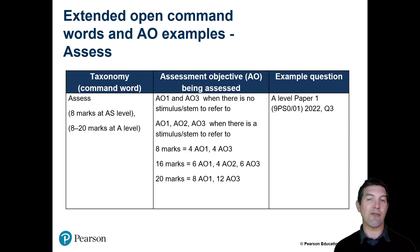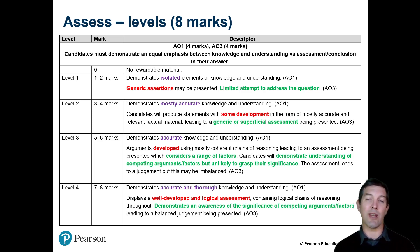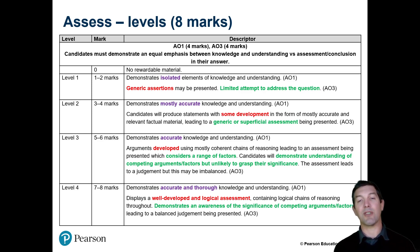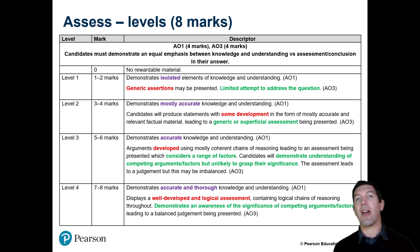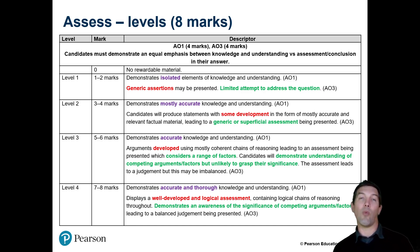Assess is used for a slightly different range of questions, but again it's always AO1 and AO3, with AO2 also possible if there's a context — four marks available for that. The level-based mark scheme looks very similar. Comparing it with the previous one, we're now looking for competing arguments instead of strengths and limitations, and a balanced judgment instead of a conclusion. Assess is used where you're being asked to judge how well a particular theory explains a behaviour, whereas evaluate is used more where there are strengths and limitations but you're not necessarily coming to a final decision or judgment. With assess, you still need to show awareness of arguments on both sides, but you're coming to a judgment and a decision.